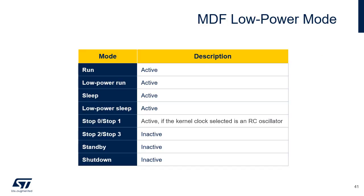MDF can be active in all modes except in Stop 2, Stop 3, Standby, and Shutdown modes. In the Stop modes, the content of MDF registers is kept. In Stop 0 and Stop 1 modes, MDF supports Low Power Background Autonomous mode or LP BAM. In Standby mode, MDF is powered down and must be reinitialized after exiting Standby mode.